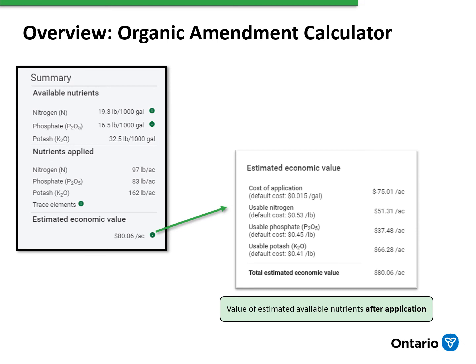The last information icon gives additional information about the economics of the manure application. Using default values, it will give an estimate of cost of application, as well as an estimate of available nitrogen, phosphorus, and potash based on fertilizer equivalent prices. The total economic value is an estimate of available NPK after application. When manure is applied to fields that have the highest fertility needs, the economic value of that manure is the highest. The organic matter and micronutrients also provide value, but at this point are not included in the economic value calculation.